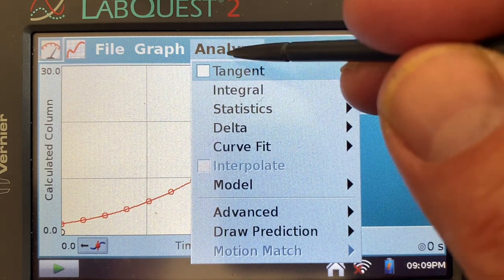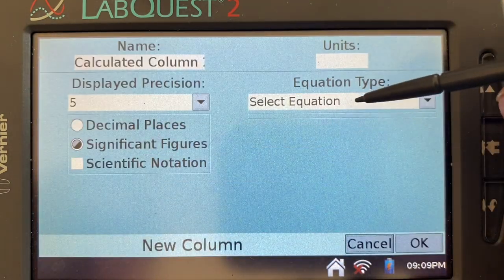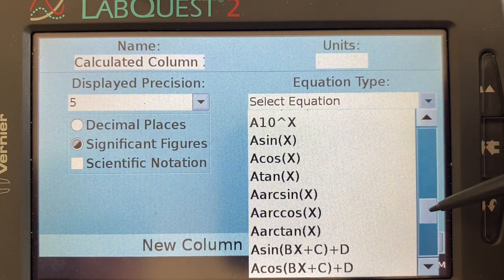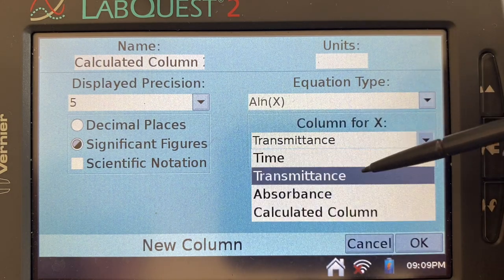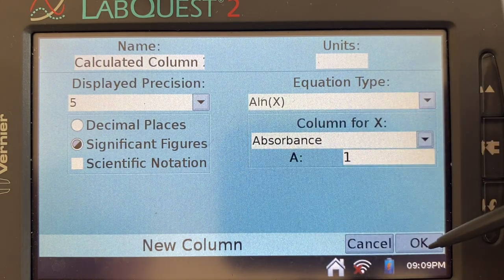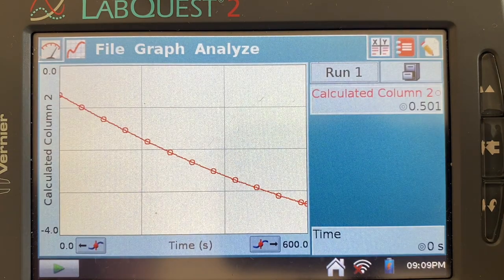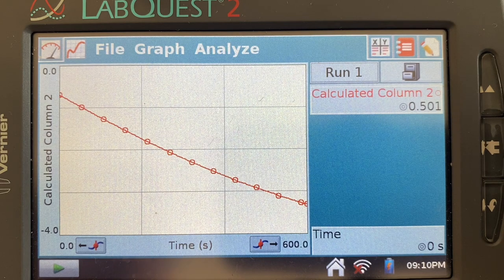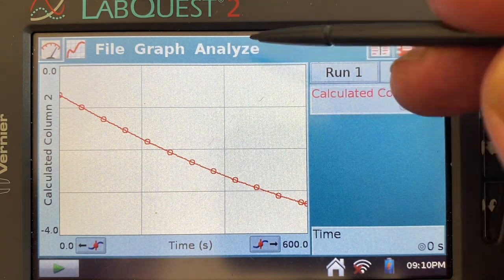So let's do that one more time. And we will do the natural log of the absorbance, which is proportional to the concentration. And look at that. That is my natural log graph of concentration versus time, and it is quite linear. Not perfect, but still pretty good.